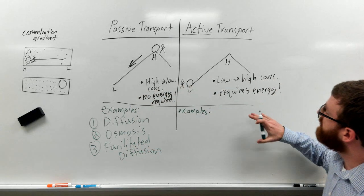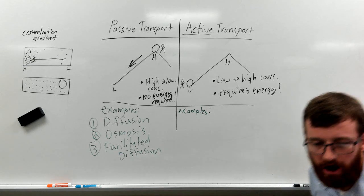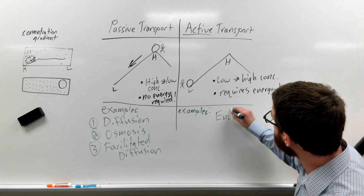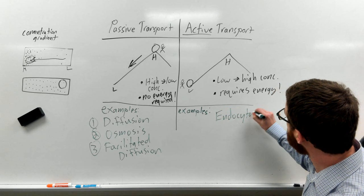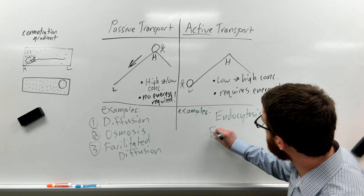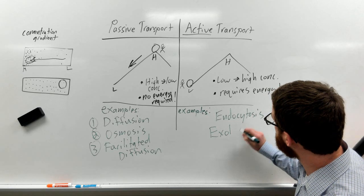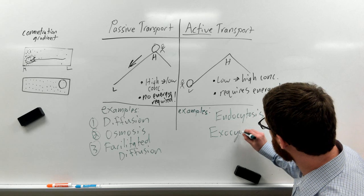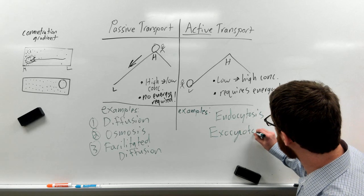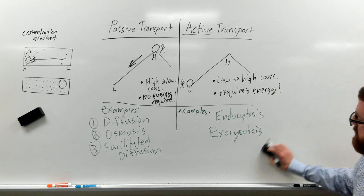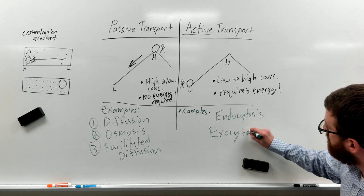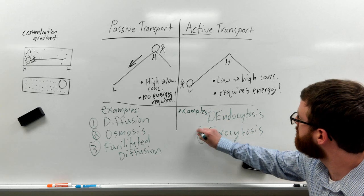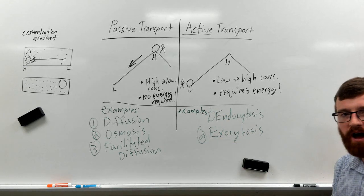And for active transport, our two examples here are endocytosis and exocytosis. So those are the two examples of active transport.